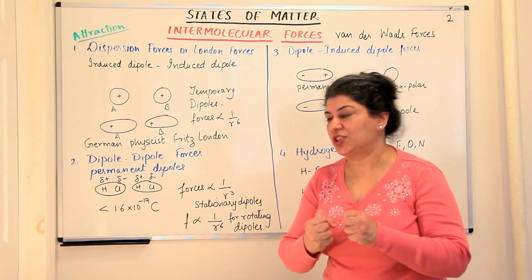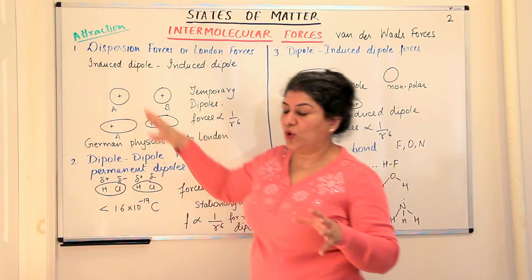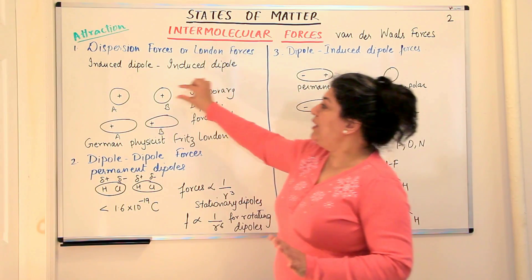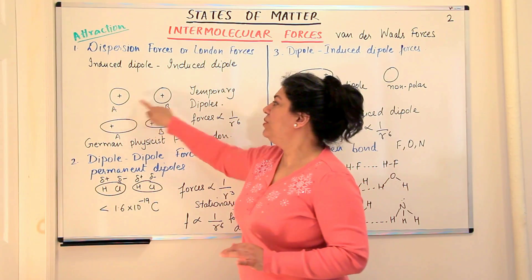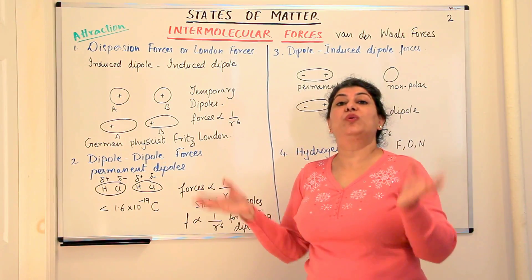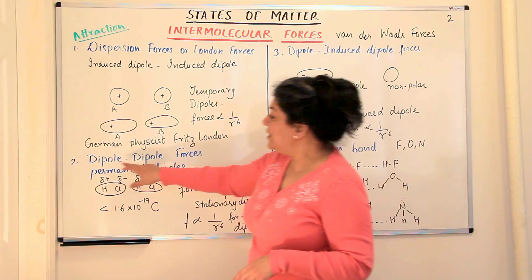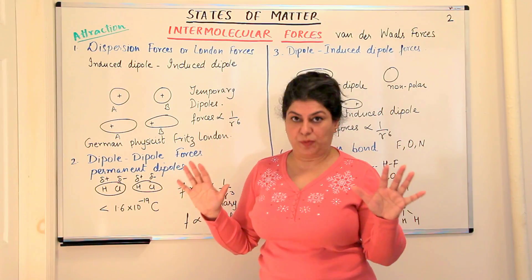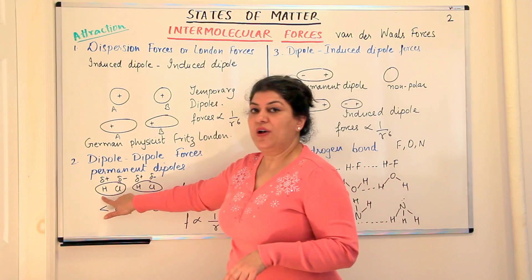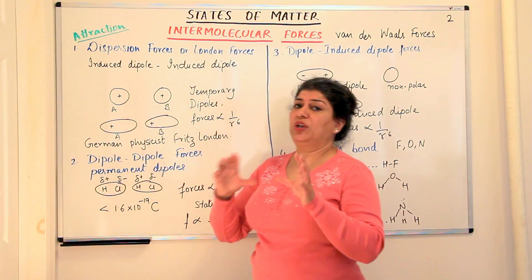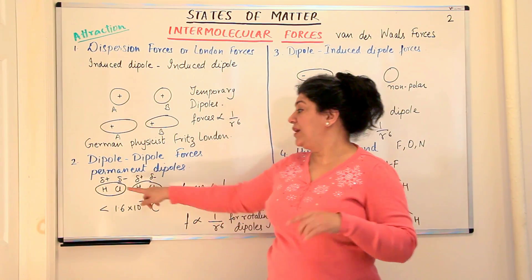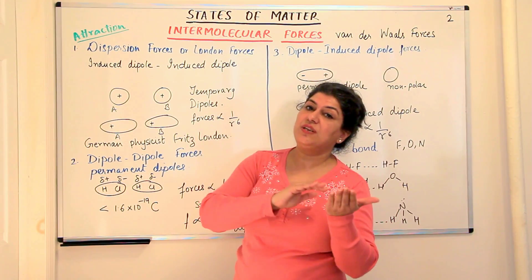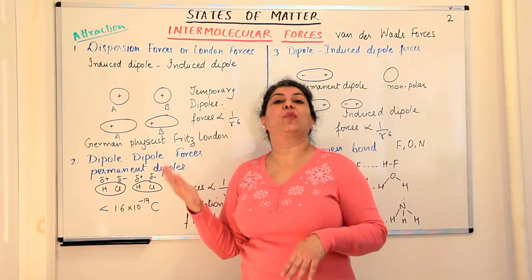The second type of Van der Waals forces of attraction is dipole-dipole forces. In induced dipole–induced dipole interactions, both molecules were non-polar and the dipoles were temporary. But in dipole-dipole forces, both molecules are permanent dipoles — they are already polar molecules. In a polar molecule, covalent bonds form between atoms with different electronegativities, so one atom acquires a partial positive charge and the other a partial negative charge.